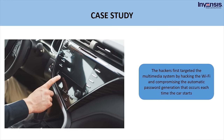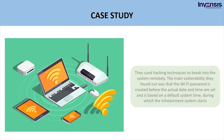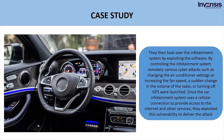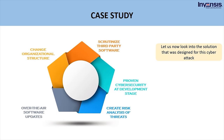The hackers first targeted the multimedia system by hacking the Wi-Fi and compromising the automatic password generation that occurs each time the car starts. The main vulnerability was that the Wi-Fi password is created before the actual date and time are set, based on a default system time during which the infotainment system starts. They then took over the infotainment system by exploiting the software, launching attacks such as changing air conditioner settings, altering radio volume, or turning off GPS. Since the car infotainment system uses a cellular connection to provide internet access, they exploited this vulnerability to deliver the attack.